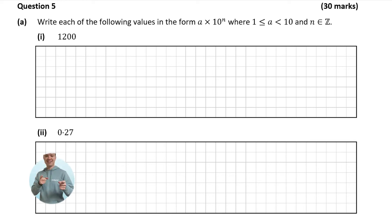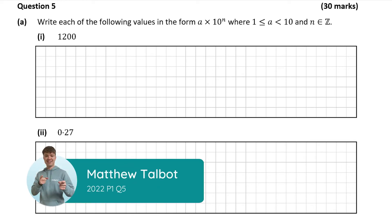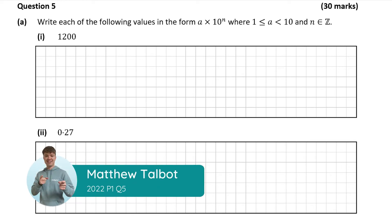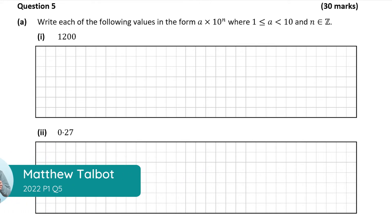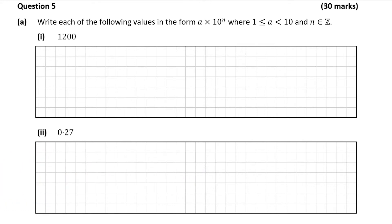Hello and welcome to the video. Matthew here and we're going to look at question 5, which is a 3-mark question. We have to write 1200 in the form a × 10 to the power of n.